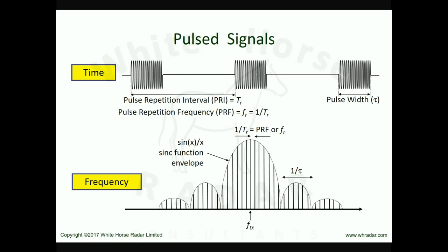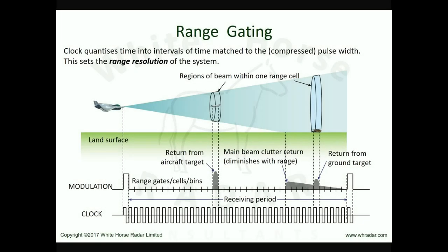We start with range. Here we see an airborne pulsed radar with several targets and surface clutter within its main beam. The pulsed modulation and a clock waveform are also shown. The modulation waveform goes high to indicate a transmitted pulse and remains low during the receiving time between pulses. The clock marks out regular increments of time throughout the receiving period, quantizing time into a series of range gates, or range cells, or range bins. The width of each range gate is normally set to the inverse of the signal bandwidth, assuming matched filter reception.